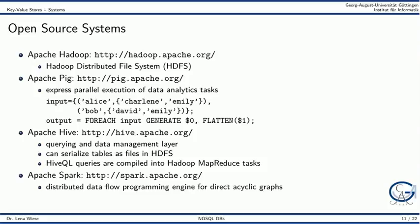The major open source MapReduce system is Apache Hadoop. In the Hadoop ecosystem, there are several other additional technologies. For example, Apache Pig lets us express several data analytics tasks. Apache Hive offers a layer with which HiveQL queries can be compiled into MapReduce tasks. Spark is a framework to process data flows as directed acyclic graphs.